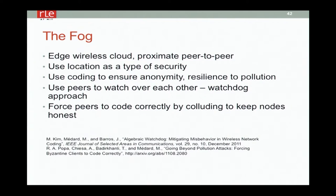The idea is to also use the fog — the edge wireless cloud, proximate peer-to-peer. We have to worry there about security. Work in my group has looked at how coding can ensure anonymity, resilience to pollution — what if somebody codes in something bad? In the wireless domain, you can use peers to watch over each other using watchdog algorithms, colluding to keep nodes honest and force peers to code correctly.